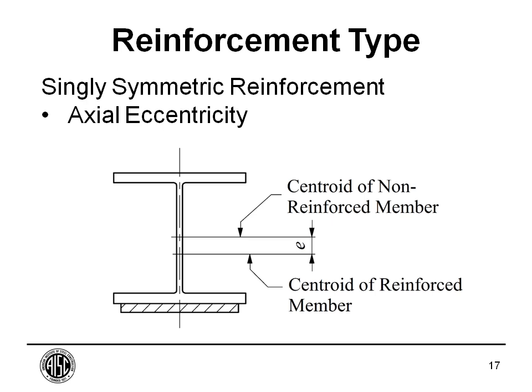In step number one — reinforcement type — I'm going to point out a couple of disadvantages to singly symmetric reinforcement. What I've got shown here is a wide flange column reinforced on one flange. Maybe you don't have access to the other flange. One disadvantage is that your original axial load is going to be assumed at the centroid of the non-reinforced member. When you reinforce it, that centroid is going to shift toward the reinforcement, creating an eccentricity that causes a moment in your column. In addition to the axial load, you'll need to design for that moment — go to AISC Chapter H, calculate the axial strength, the flexural strength, and then do the combination per Chapter H.